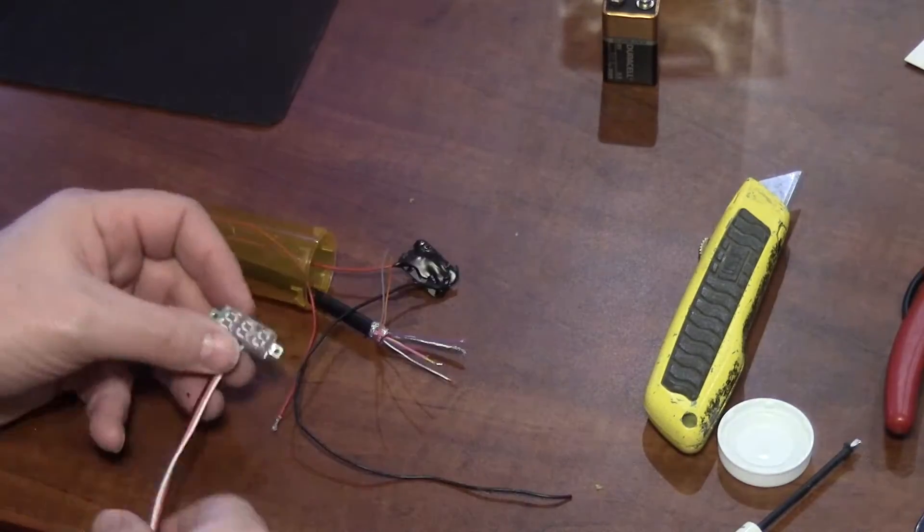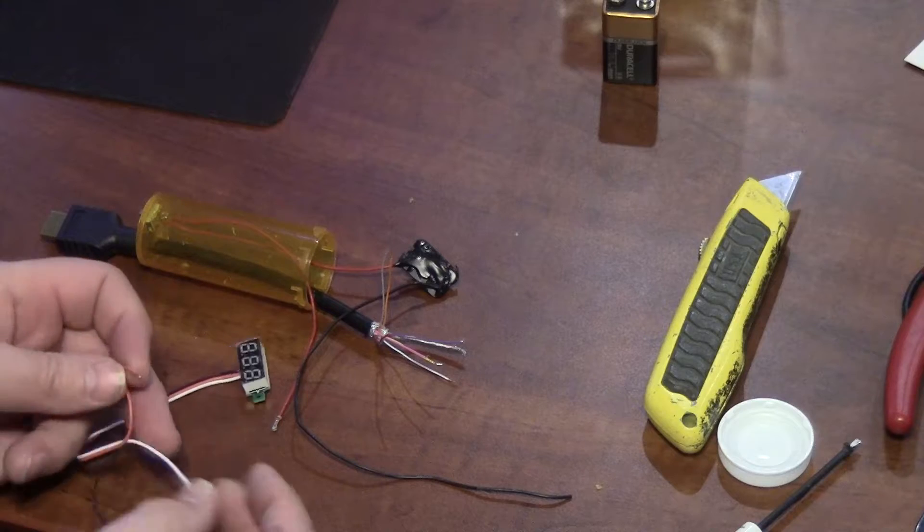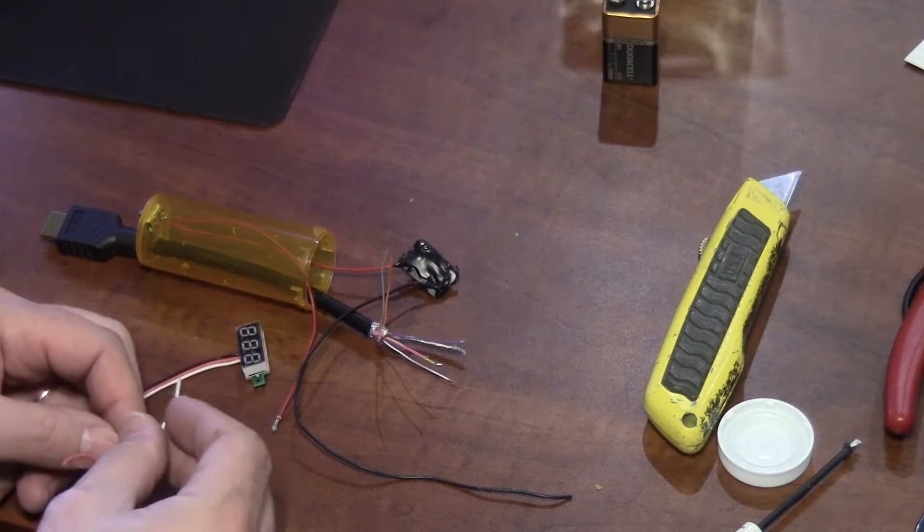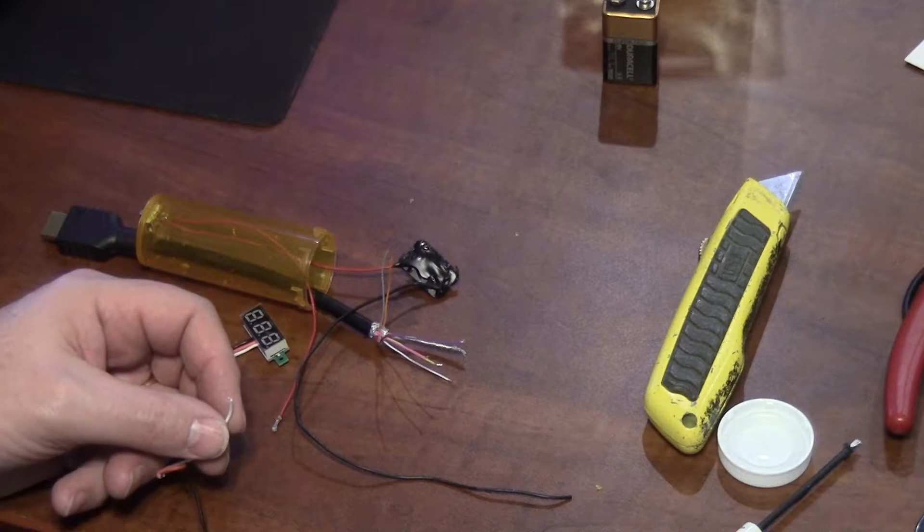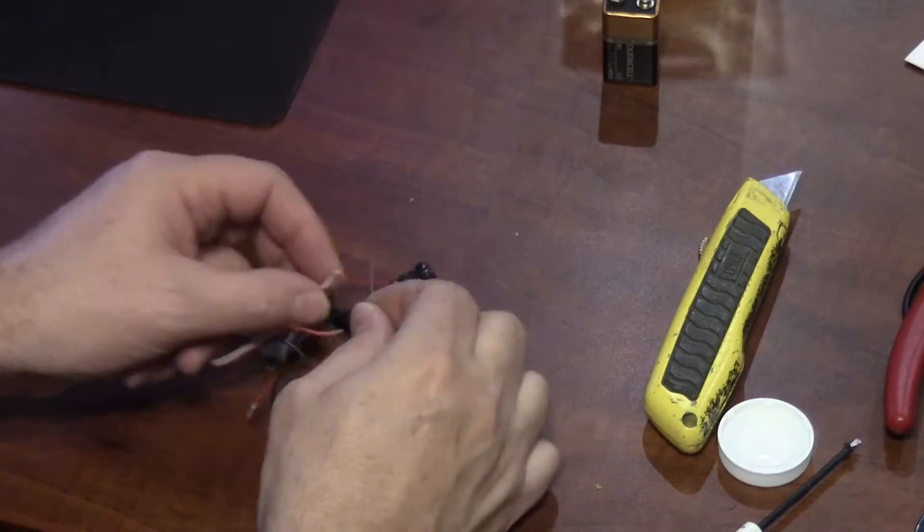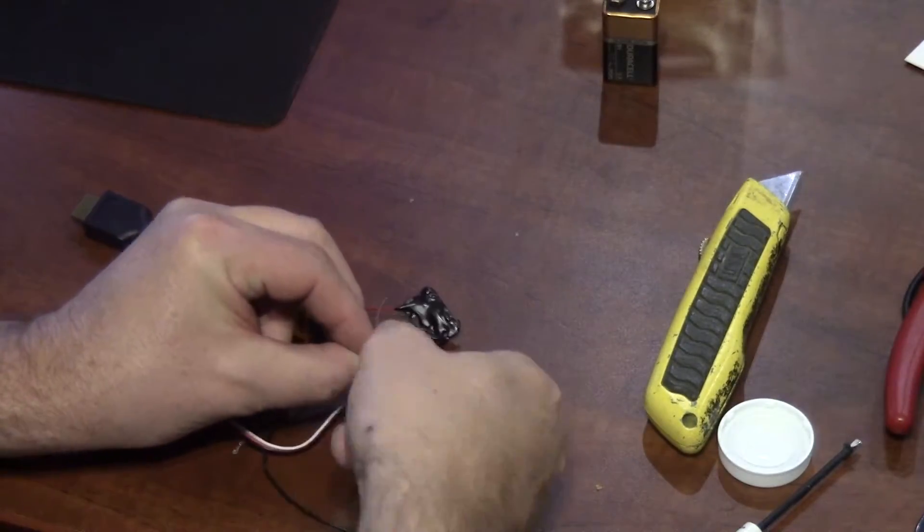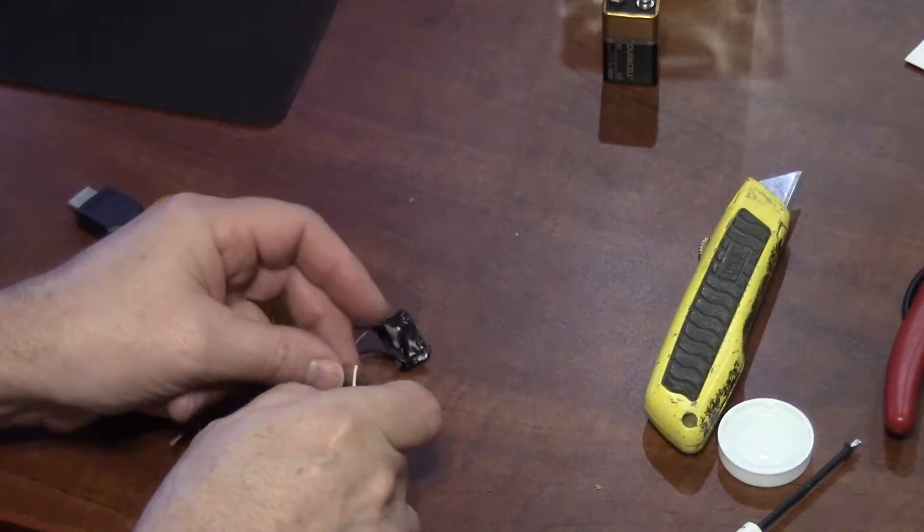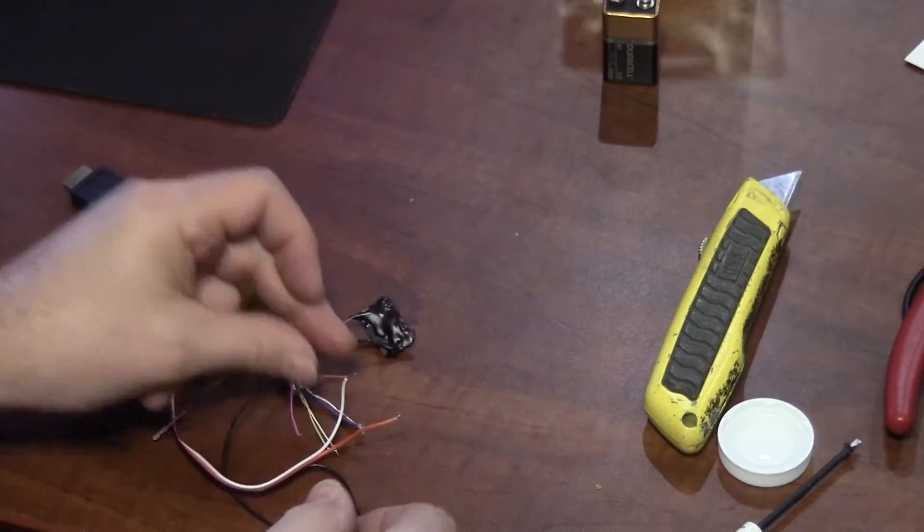Okay, here you can see the switch is installed in the case and we're just going to hook up the meter wires now. So we have a white wire which is what we're going to be measuring, red wire goes to the positive terminal of the battery, and the black wire is ground and that ground also needs to go to what we're measuring.